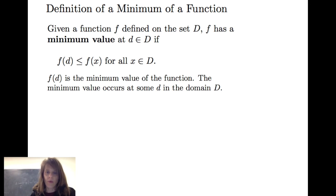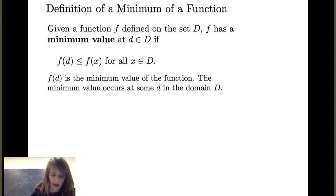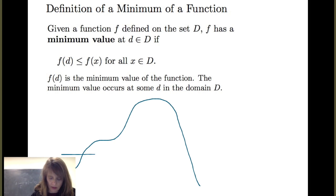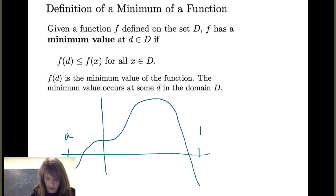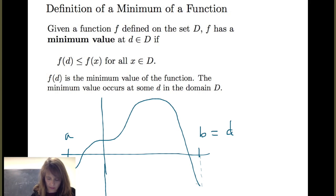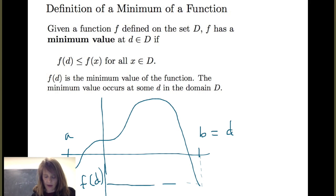The minimum value occurs at some point in the domain. Again, if I've got a similar graph, we can say that the lowest possible output value occurs at B in this case — that B is the D we're talking about — and the minimum is the function f evaluated at D.